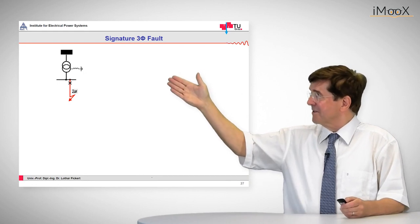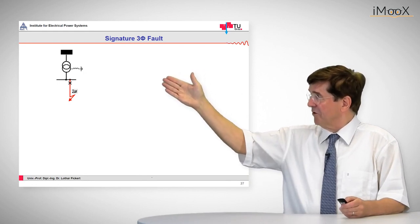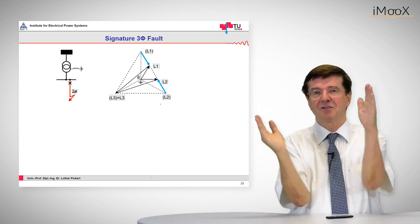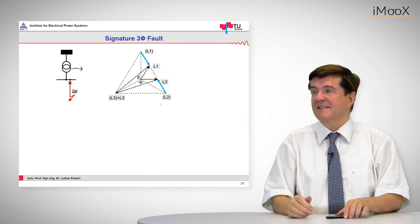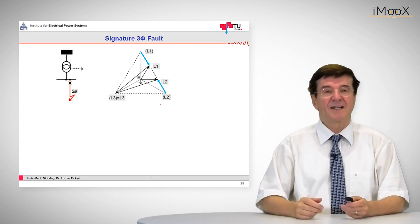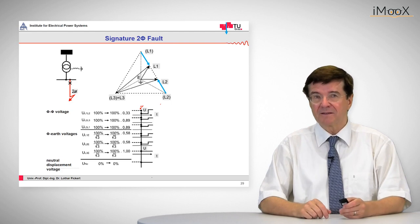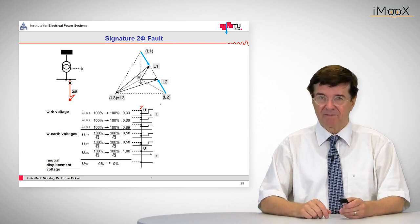Again we start with the same systematic. We start with the appearance of the fault, then with a triangle. And here we see that the triangle collapses only in two phases. The two phases in this case are L1 and L2 and the traces repeat the same pattern.